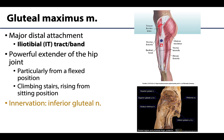The gluteus maximus plays a role in lateral rotation of the hip joint, but its major action is extension of the hip joint — it is the strongest extensor of the hip, though it acts mostly when force is necessary. It works primarily between the flexed and standing position, such as when rising from sitting or walking uphill or upstairs, and is only used briefly during casual walking and standing, where the hamstring muscles in the posterior thigh take over.